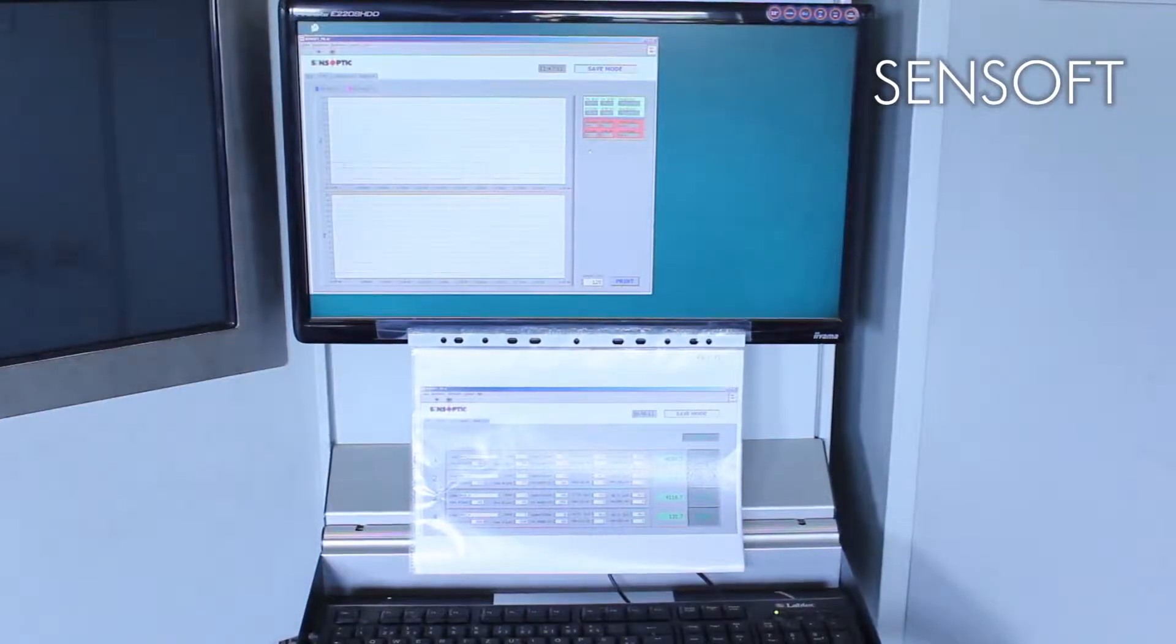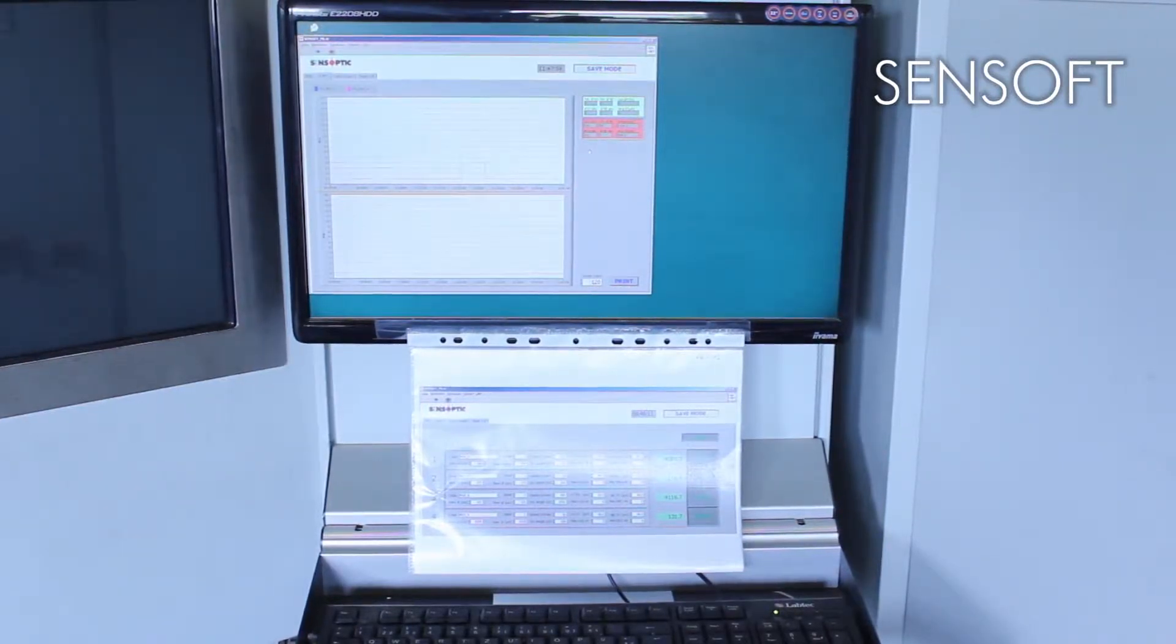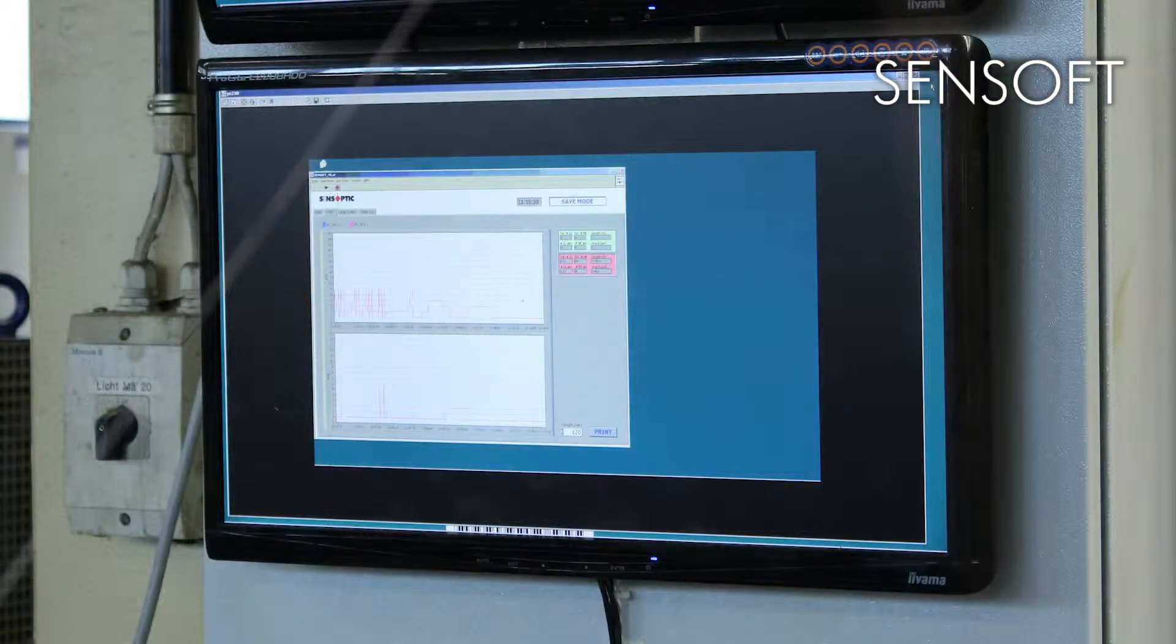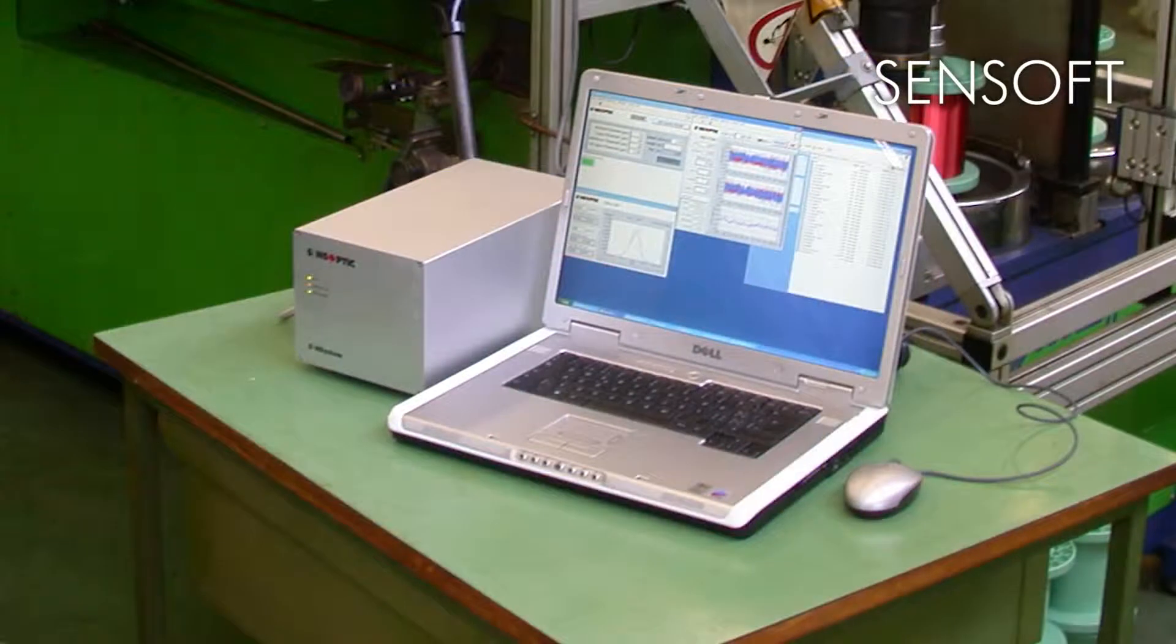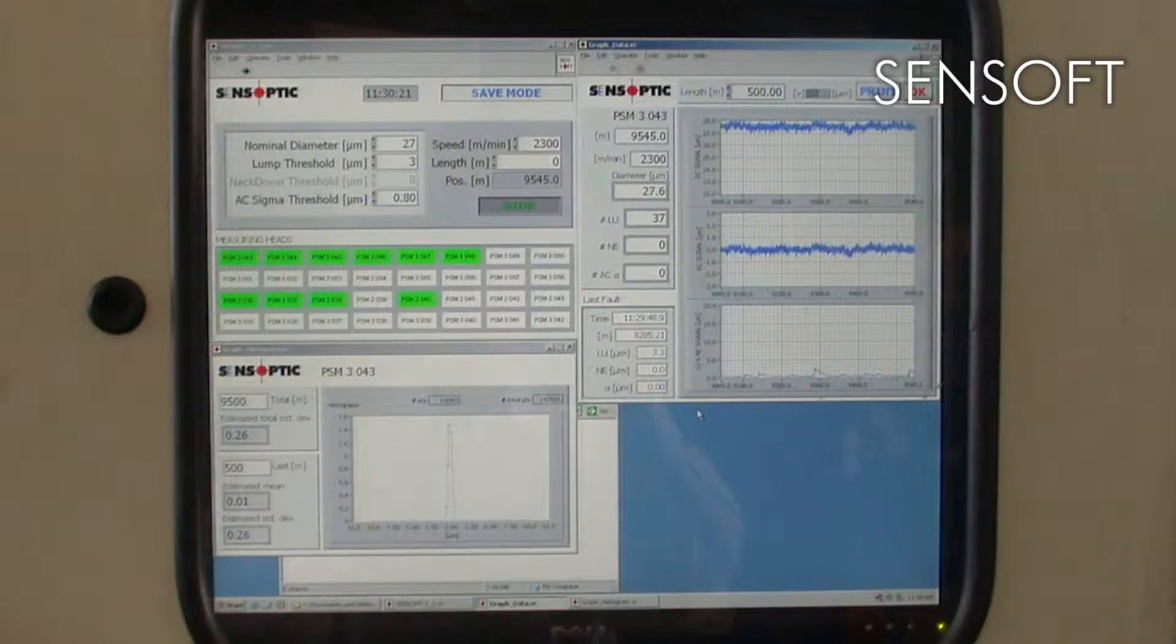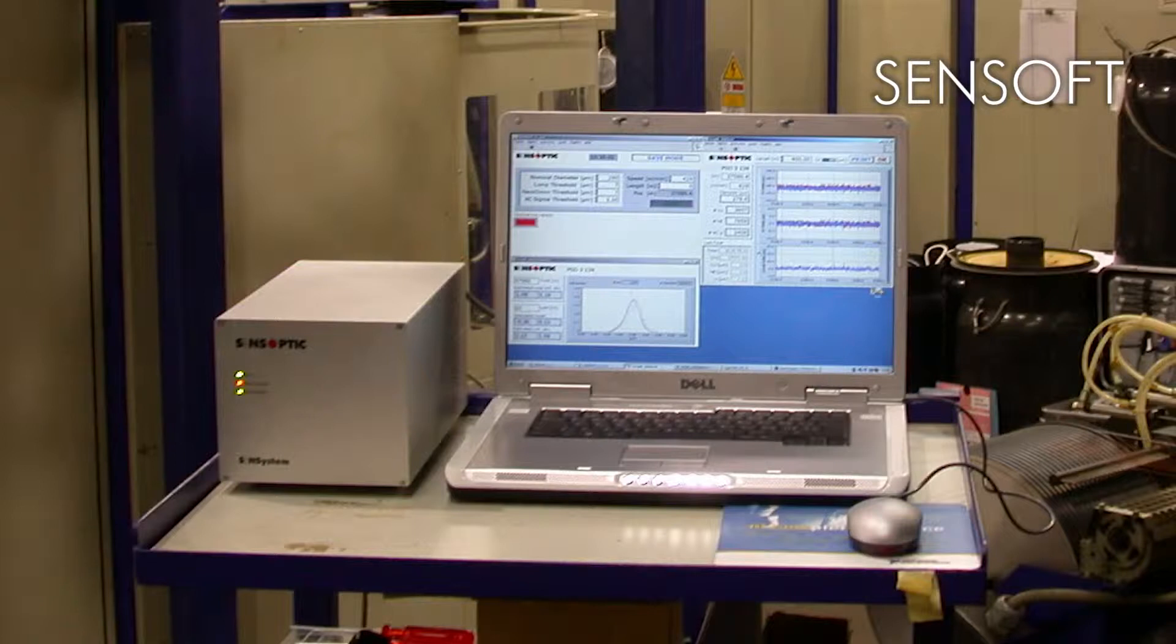SensSoft is data acquisition and data visualization software specially designed for our profile sensors. The software is available in different versions and provides a simple and user-friendly way of managing quality control measurements with multiple sensors from a personal computer. In particular, the software continuously displays trend charts as well as statistics and quality parameters of the monitored lines.